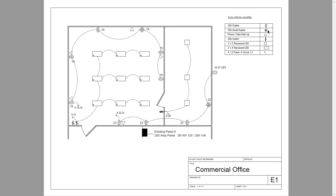The legend shows receptacles — duplex or quad duplex — phone stub-ups, 20-amp switches. It shows two-by-two recessed LEDs, two-by-four recessed LEDs, and how the plan describes symbols for home runs. At the bottom, the project name is 'Commercial Office,' and this is sheet E1.